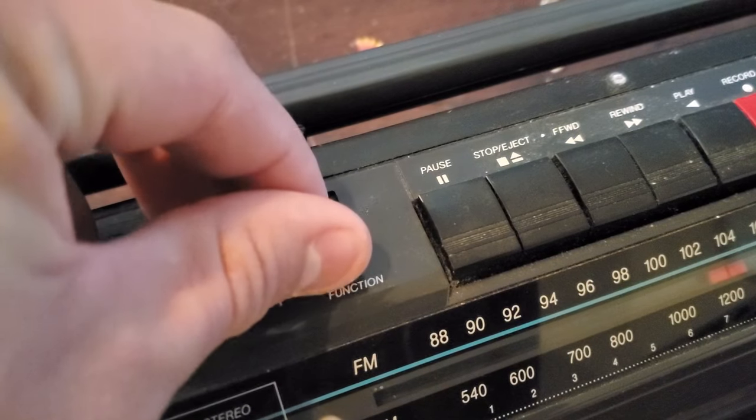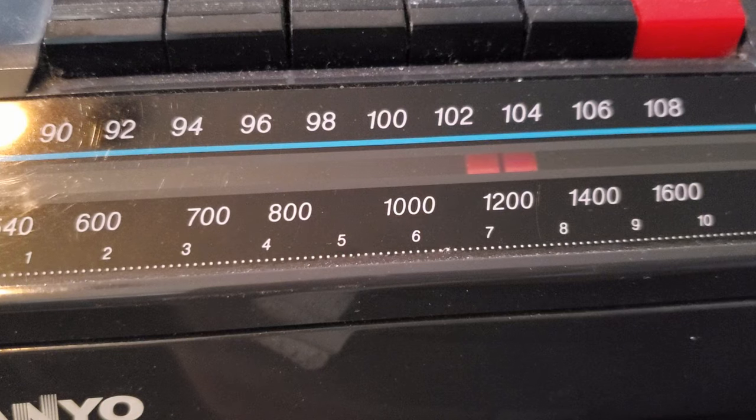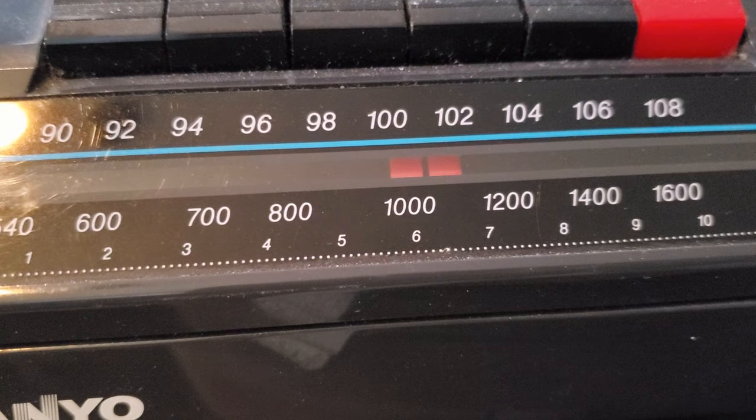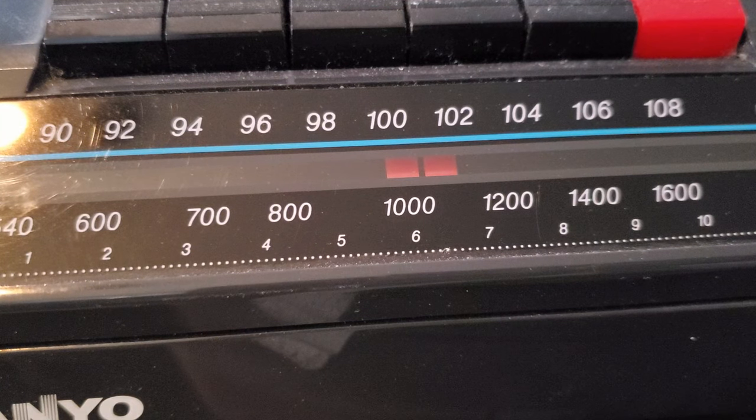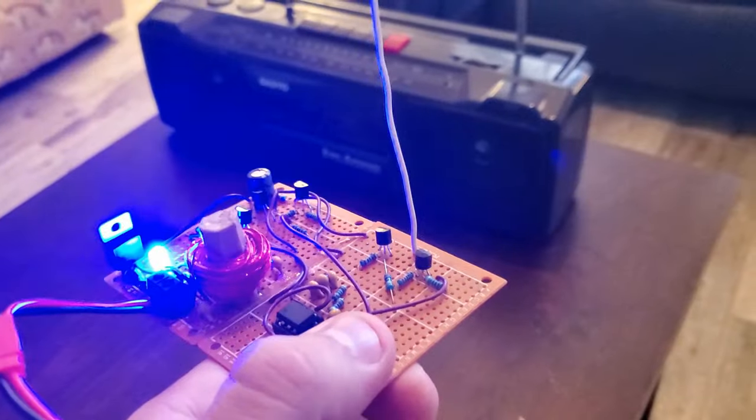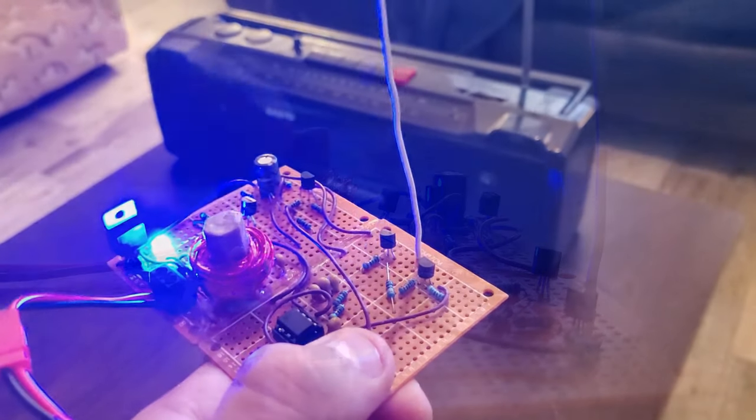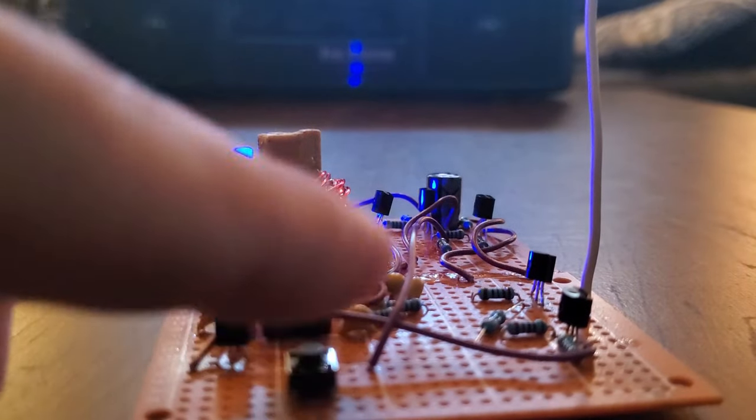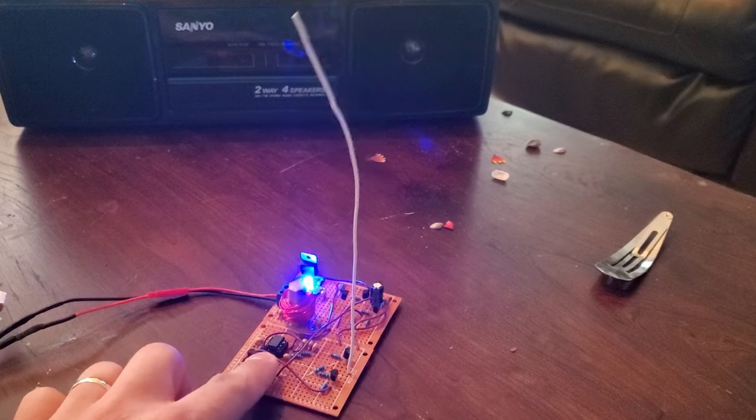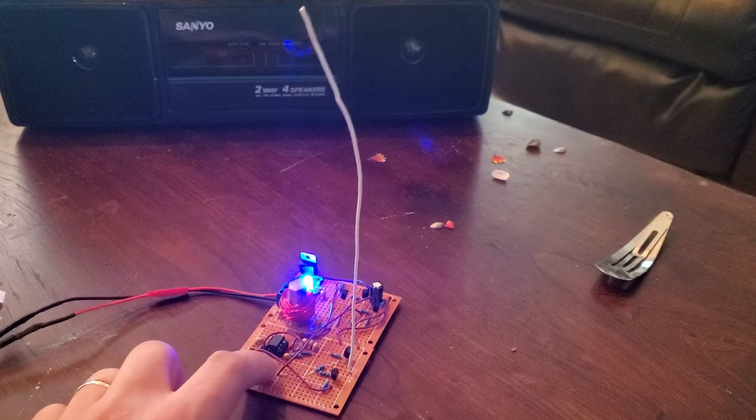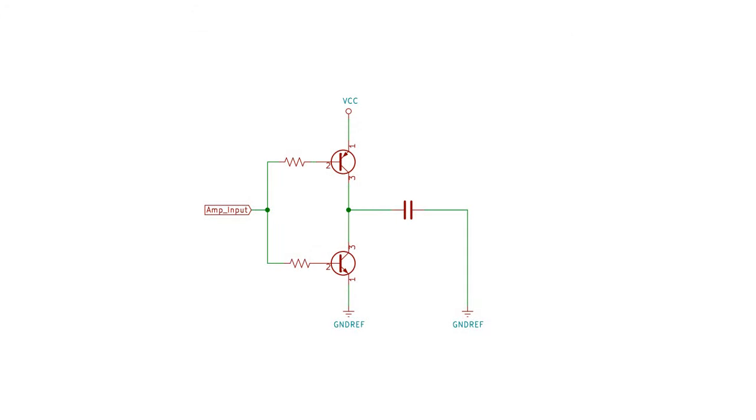Now for an actual transmit test. So the transmitter definitely works, but I'm only getting about two to three feet of range from it. I know that I'm tuned into the exact frequency I'm transmitting on, so why is my range so bad?